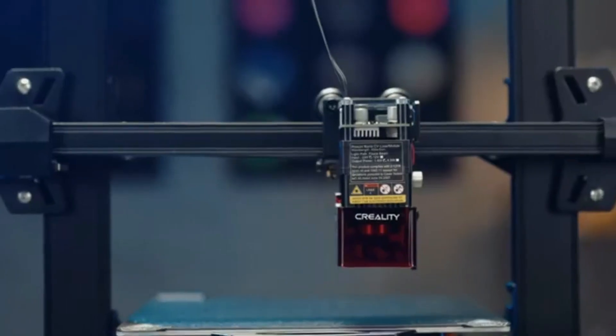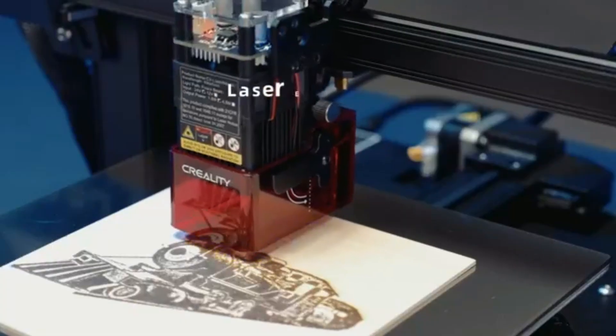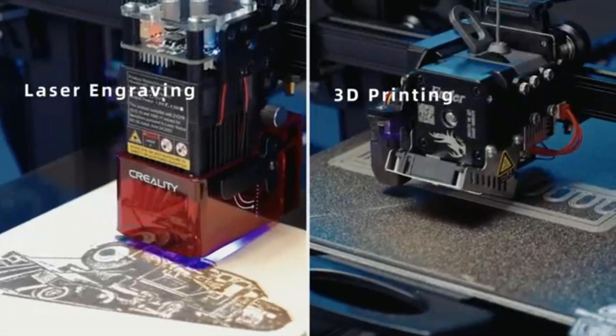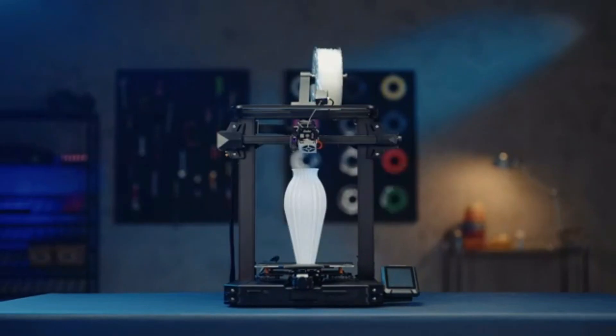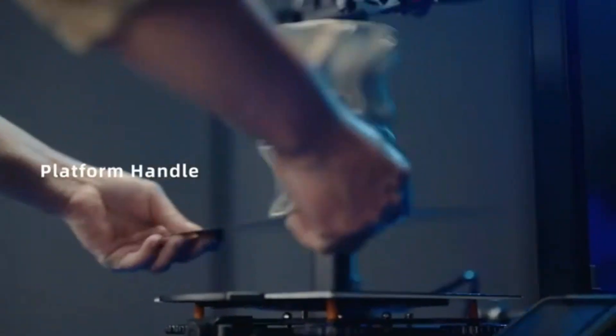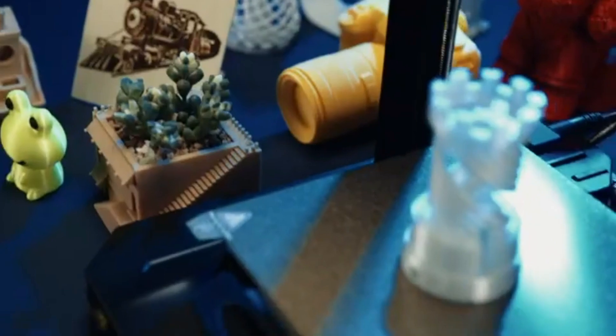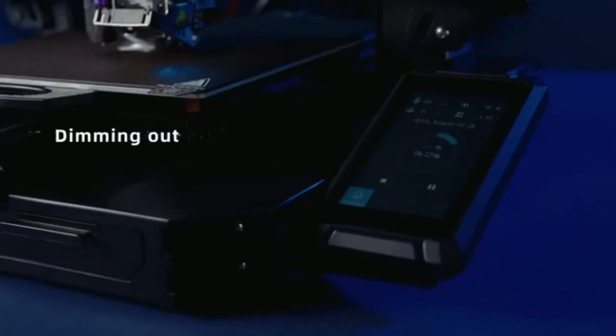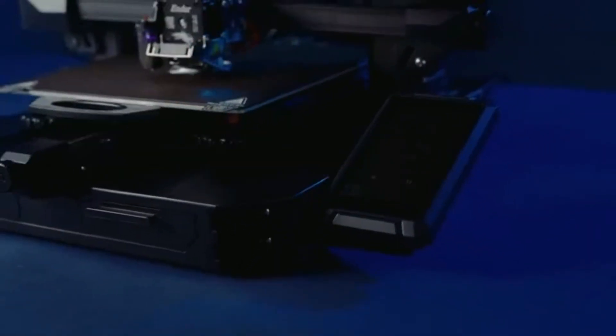The Spring Steel PEI magnetic build plate has great adhesion to the printed model and is flexible for easy removal of the printed model. It also has a 4.3-inch touchscreen and LED light for easy use and energy saving. The Creality Ender 3 S1 Pro 3D printer is definitely worth considering if you're looking for a great 3D printer.